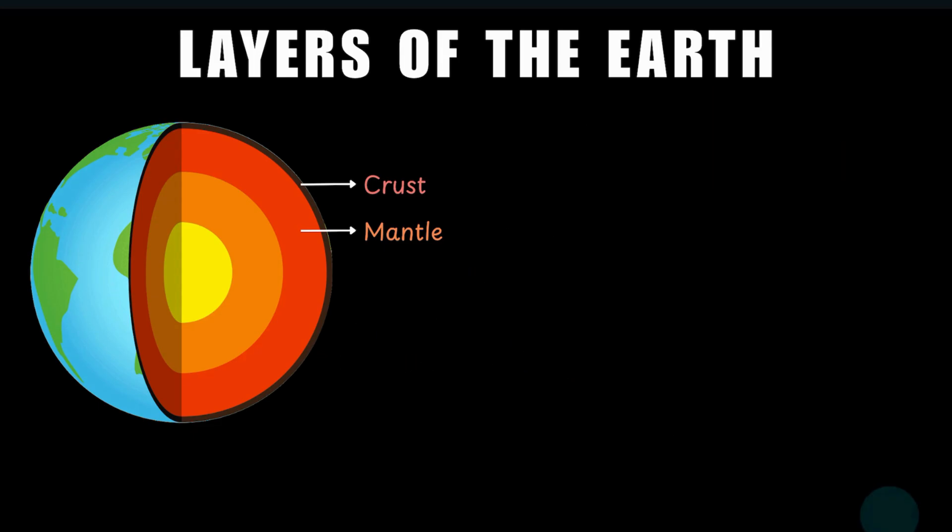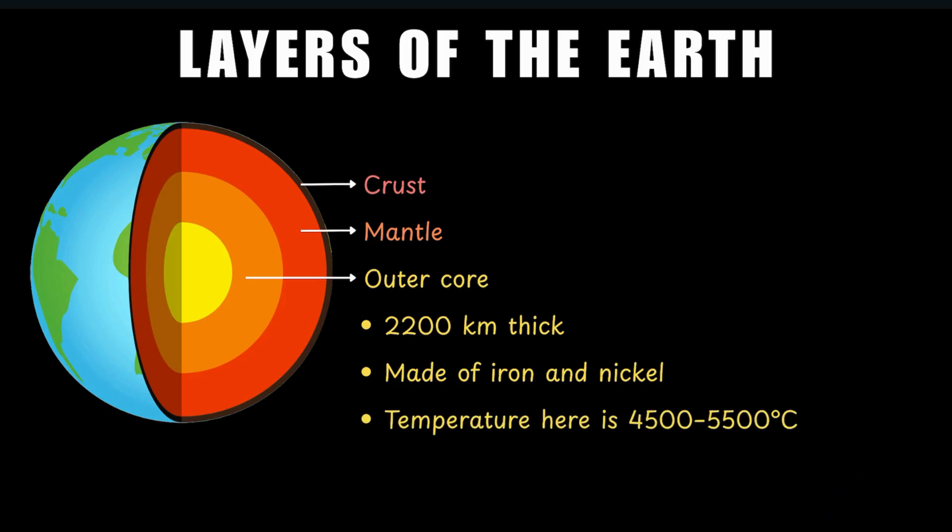Beneath the mantle, we have the outer core. And it is about 2,200 kilometers thick and is mostly made up of iron and nickel. The temperature here is around 4,500 to 5,500 degrees Celsius, hot enough to melt both the metals. So this layer too is molten.